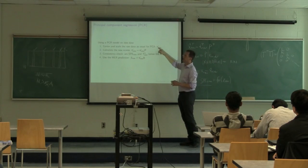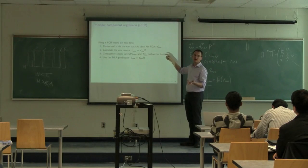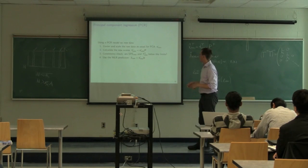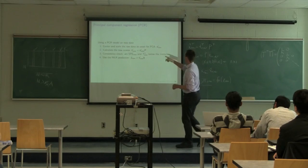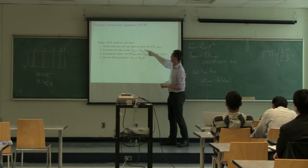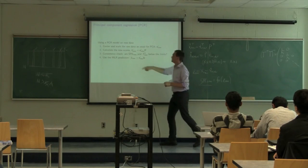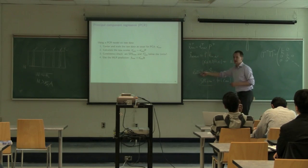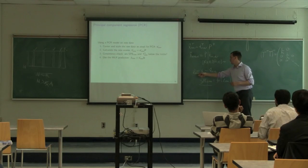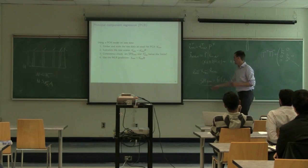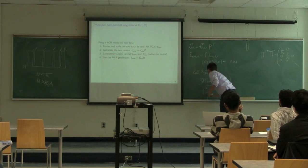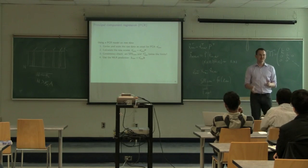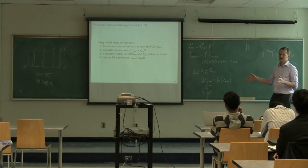Least squares just goes straight from X to get your prediction for Y. Principal components regression is much more detailed: center and scale X, multiply by P's to get T's, multiply by P to get X-hat, compute residuals, calculate SPE_new and T-squared_new, do the checks, and then get your prediction.